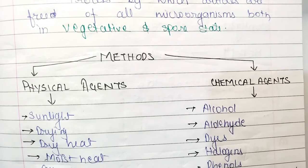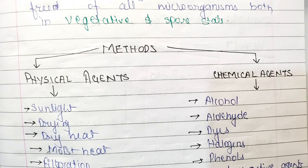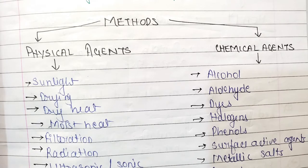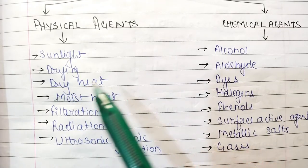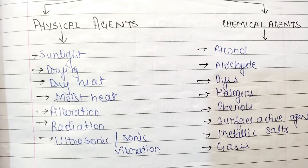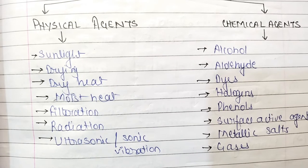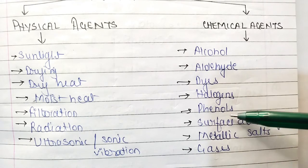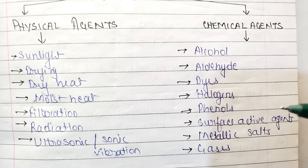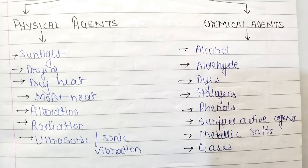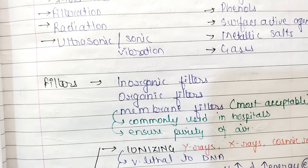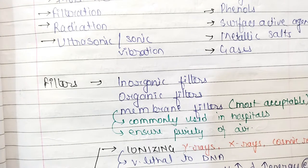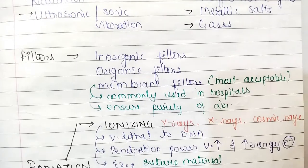There are mainly two types of methods: physical methods and chemical methods. In physical agents there are sunlight, drying, dry heat, moist heat, filtration, radiation, and ultrasonic or sonic vibration. In chemical agents there are alcohol, aldehyde, dyes, halogens, phenols, surface active agents, metallic salts, and gases. In filters, we have three types: inorganic filters, organic filters, and membrane filters. Membrane filter is the most acceptable and commonly used in hospitals, and it ensures the purity of the air.